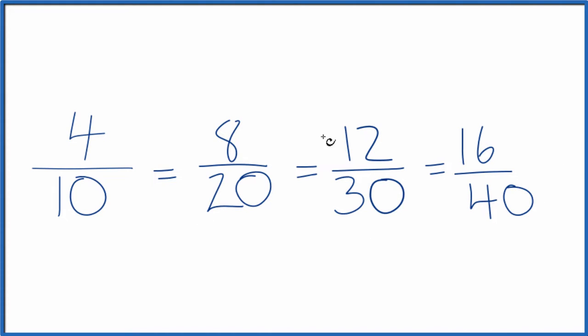And so all of these are equivalent fractions for 4 tenths. Divide 4 by 10, 8 by 20, 12 by 30, or 16 by 40, you get the same decimal answer, 0.4. They're equivalent fractions. It's just that 4 tenths, that's in lowest terms or its simplest form.